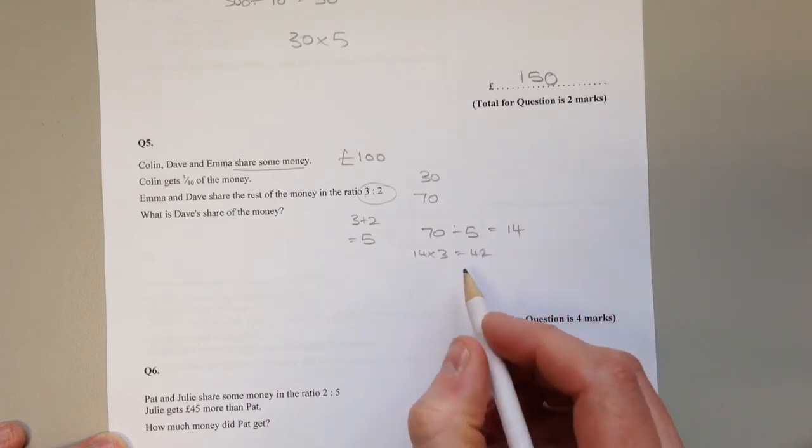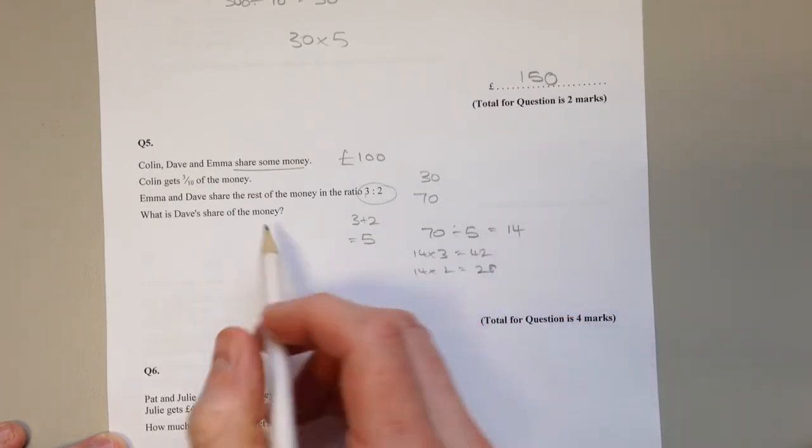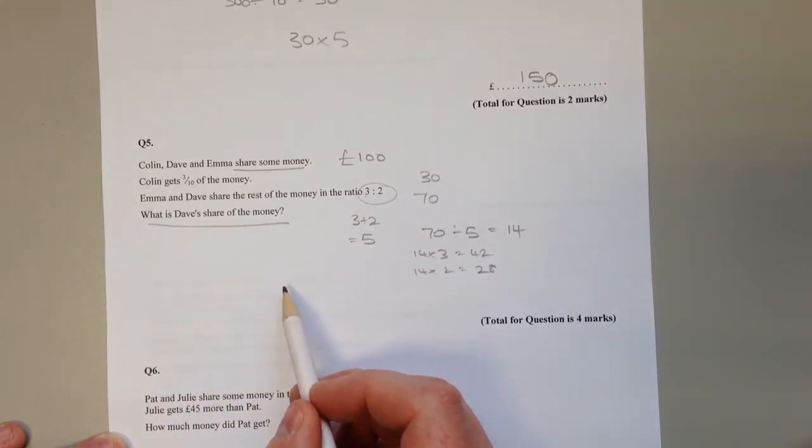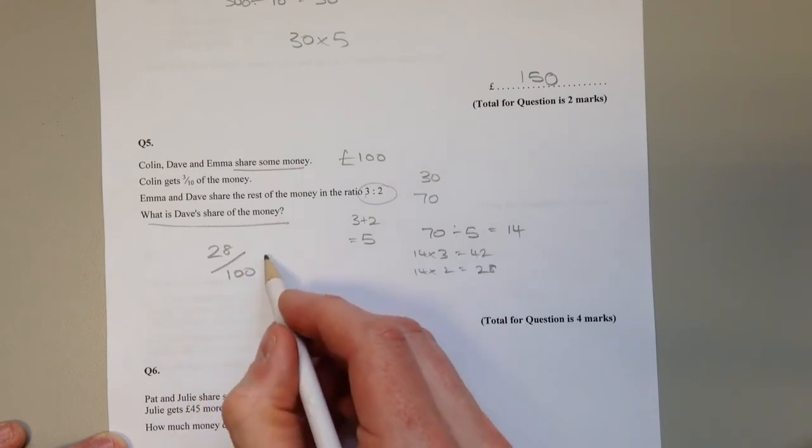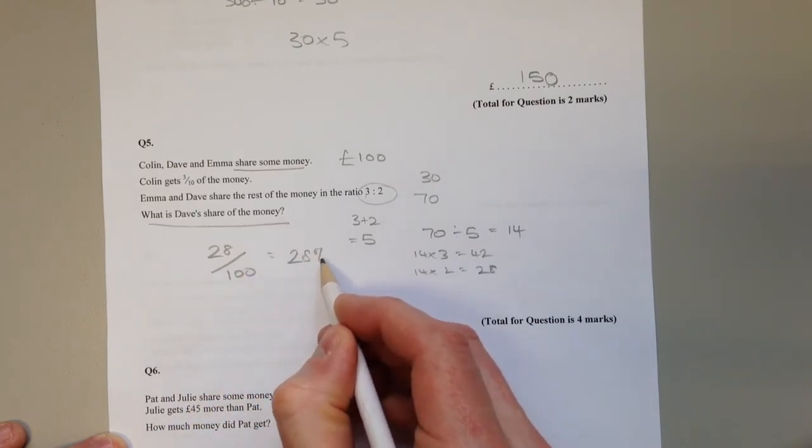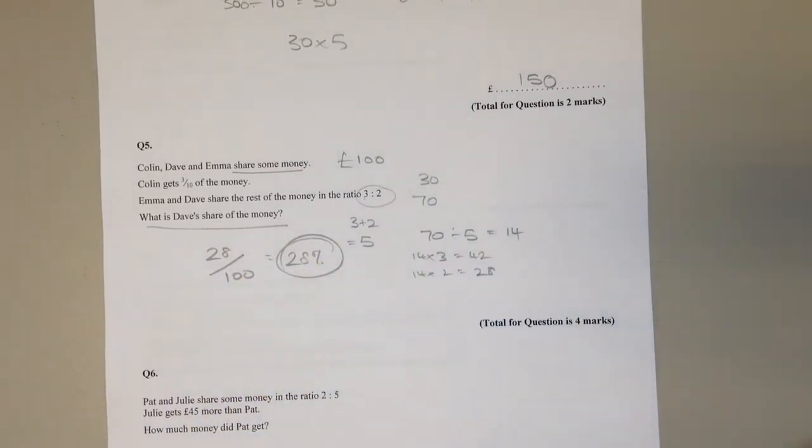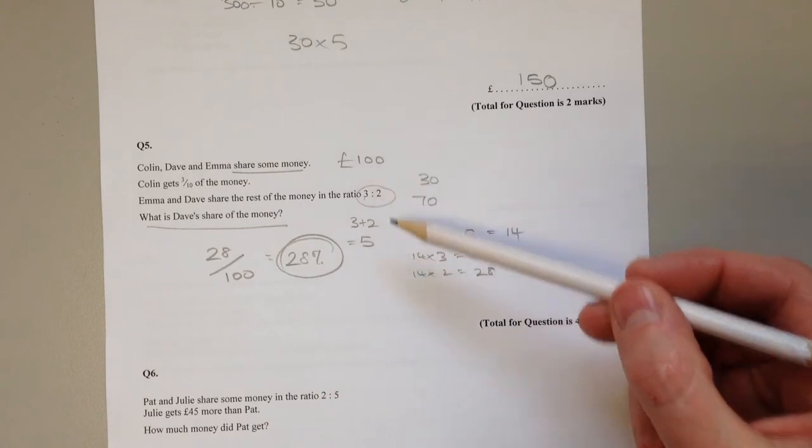There are 14. So Emma will get 14 lots of 3, which is 42. And Dave will get 14 lots of 2, which is 28. The question asks what is Dave's share of the money? Well, if he gets 28 pounds out of 100 pounds, then he's getting 28% of the money. You'll get the same percentage whatever amount you start with.